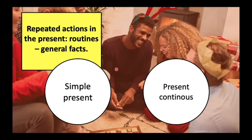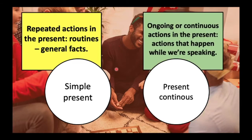We use the simple present for repeated actions in the present — actions that are repeated, such as routines or general facts. We use the present continuous to describe ongoing or continuous actions in the present, actions that happen while we are speaking. So: simple present for routines and general facts; present continuous for actions that happen as we speak.